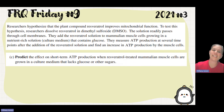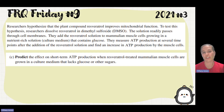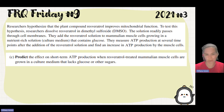Part C asks us to predict the effect on short-term ATP production when these cells are treated but glucose and other sugars are lacking. We all know that glycolysis starts with glucose, so if you don't have the starting material, can you make any of the ATP in aerobic respiration? Well, no, because you don't have the starting material.